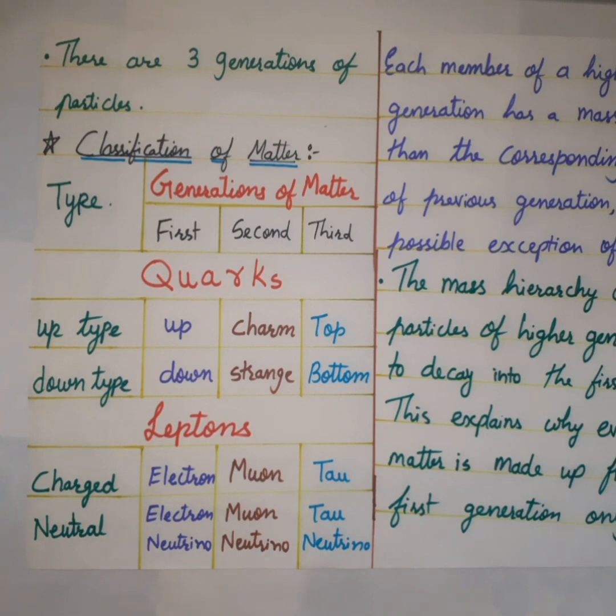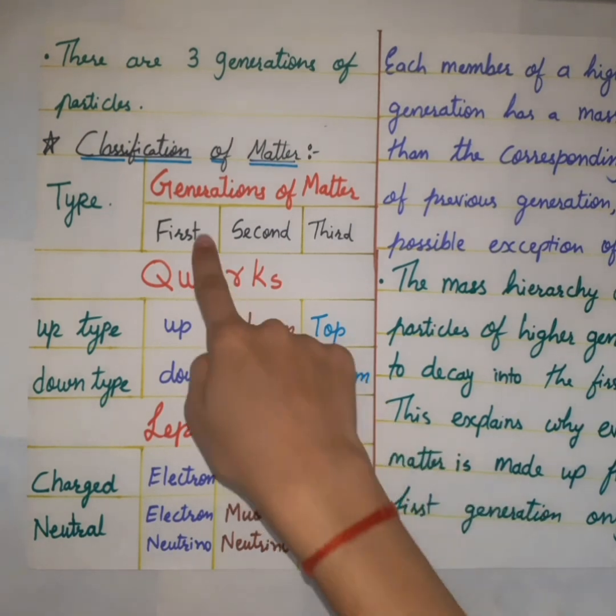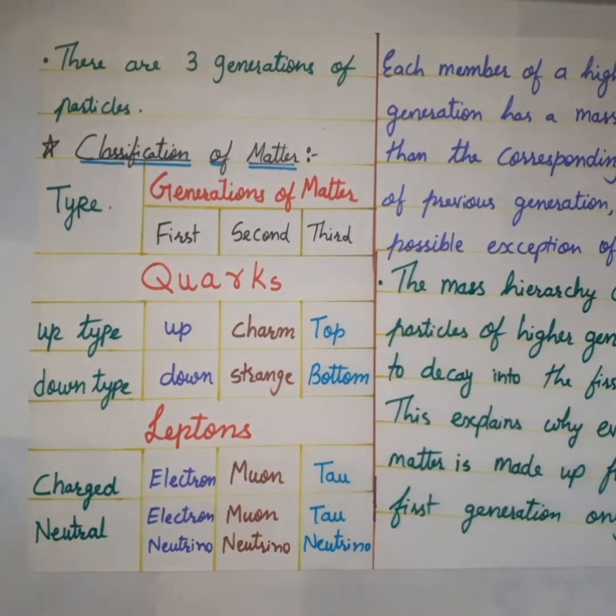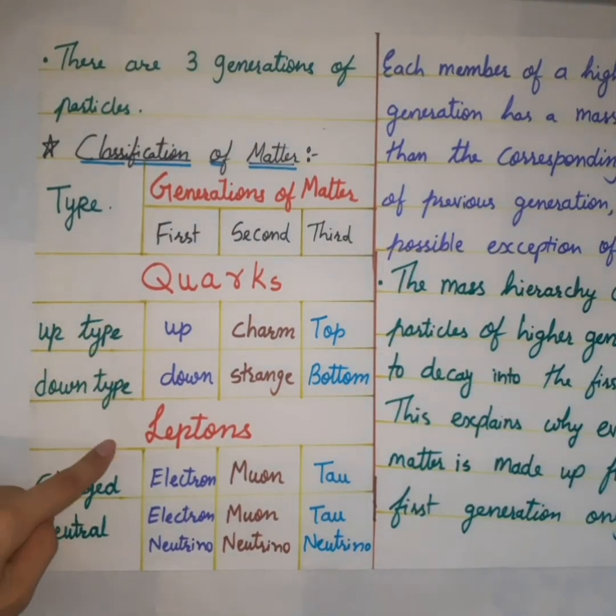And flavor quantum number is the value of lepton number for leptons. Let's discuss the classification of matter. There are three generations of particles.